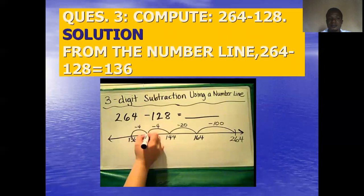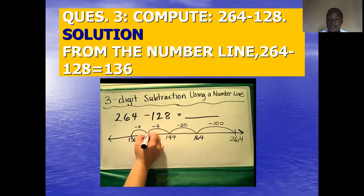Now we should compute two hundred and sixty-four minus one hundred and twenty-eight. This is a very big number. Because it is minus one hundred and twenty-eight, we move in the left direction. Moving one hundred places lands at one hundred and sixty-four; moving another twenty places lands at one hundred and forty-four — that is one hundred and twenty moved. We still need to move eight more places, landing at one hundred and thirty-six. Therefore two hundred and sixty-four minus one hundred and twenty-eight gives one hundred and thirty-six.